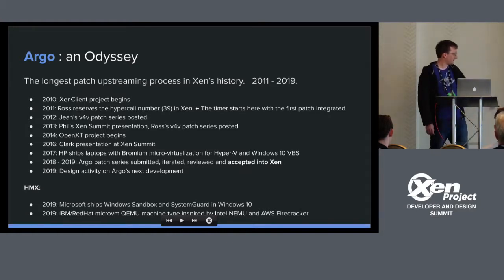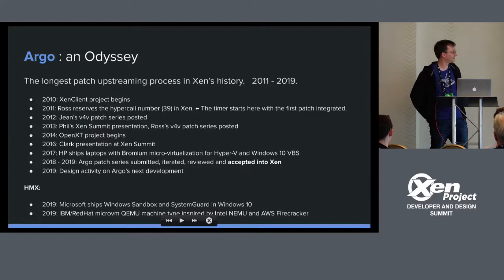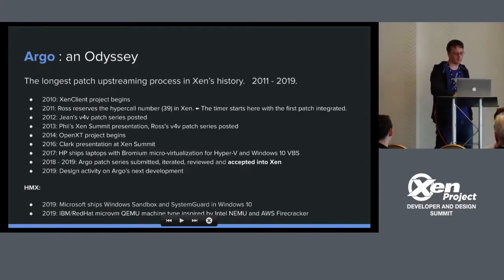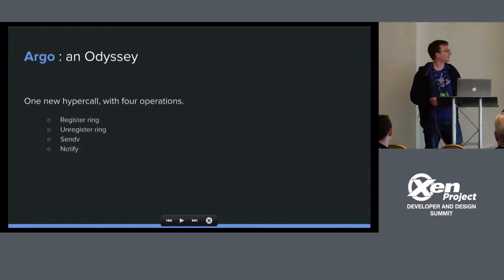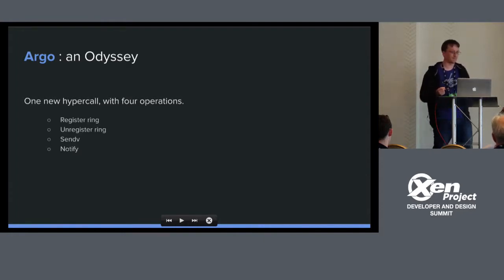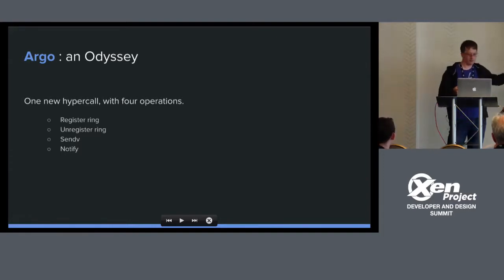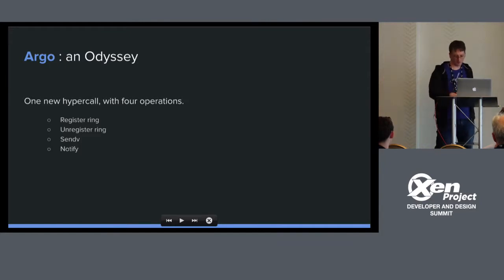There are a couple of related things: Windows has had a similar capability at least since 2006, and modifications to the QEMU machine type are of similar interest. As far as Xen is concerned, Argo is one hypercall with four basic operations: register ring, unregister ring, and then two more hypercall operations to actually operate it. If you want to establish the ability to communicate, you reserve a region of memory and let the hypervisor know.